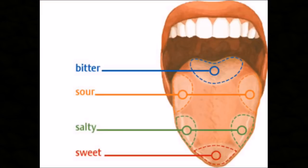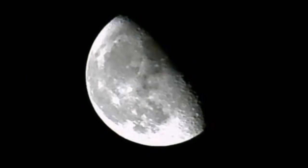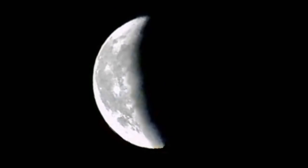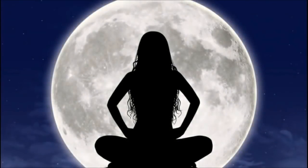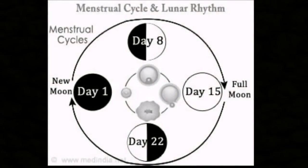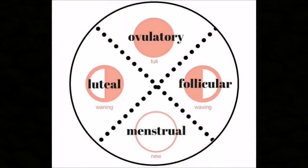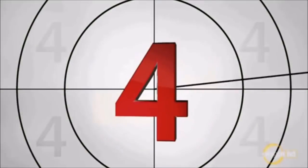Earlier on I spoke about our four moon phases: the waxing phase, the waning phase, the full moon phase, and the new moon phase. But how about the fact that all women on earth, at some point in their lives, experience menstrual cycles which are affected by these four weekly cycles of the moon? Even more interestingly, a menstrual cycle itself happens in four stages: the bleeding stage, the follicular stage, the ovulatory stage, and the luteal stage.